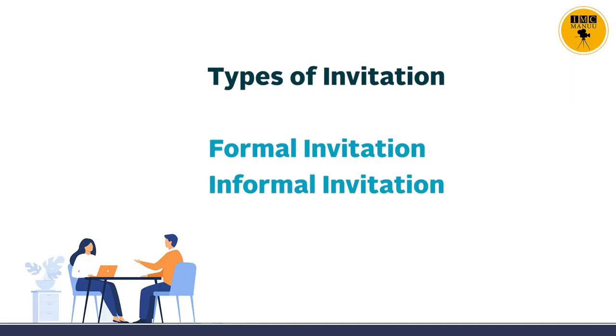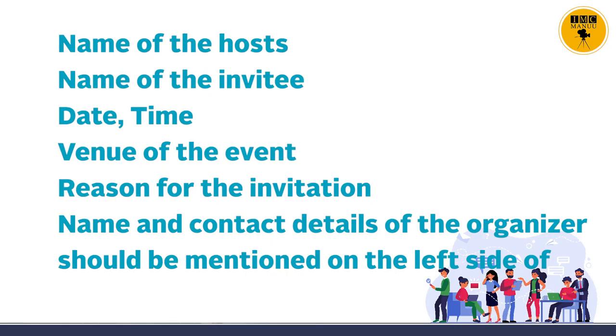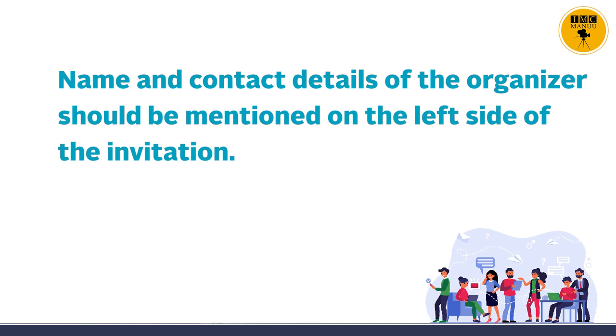Students, you must also know that when we have gatherings or functions, we invite people. Invitations can be formal or informal. A formal invitation is sent in accordance with convention for an important event. It is generally forwarded through the post and the sender waits for confirmation before including the person in the event. In a formal invitation you should mention the name of the host, the name of the invitee, the date, time, and venue of the event, the reason for the invitation, and the name and contact details of the organizers.